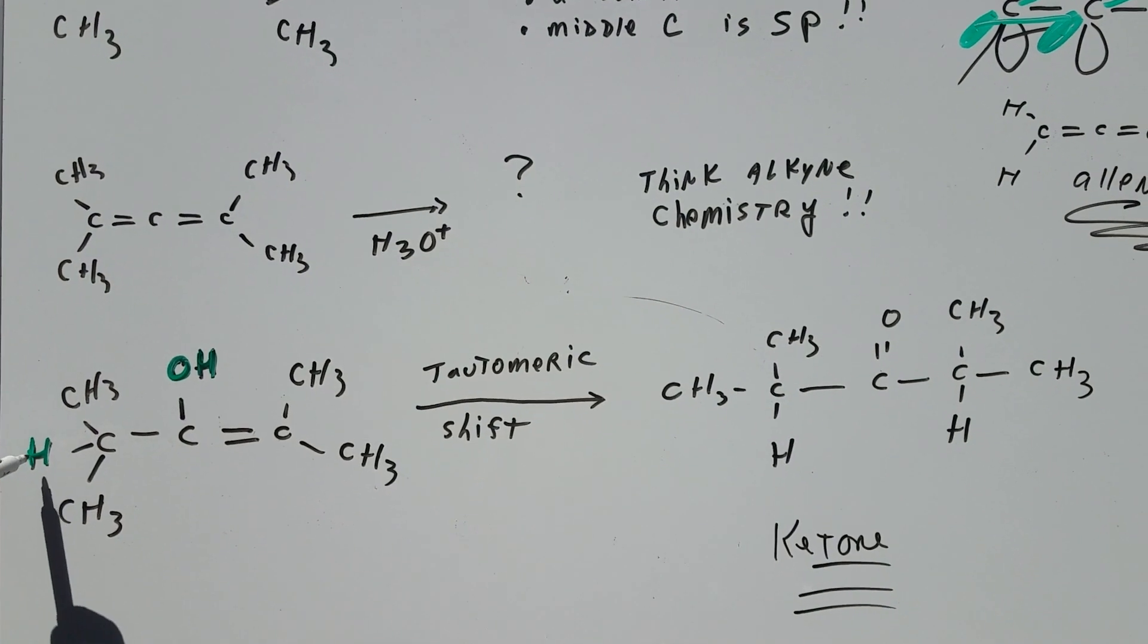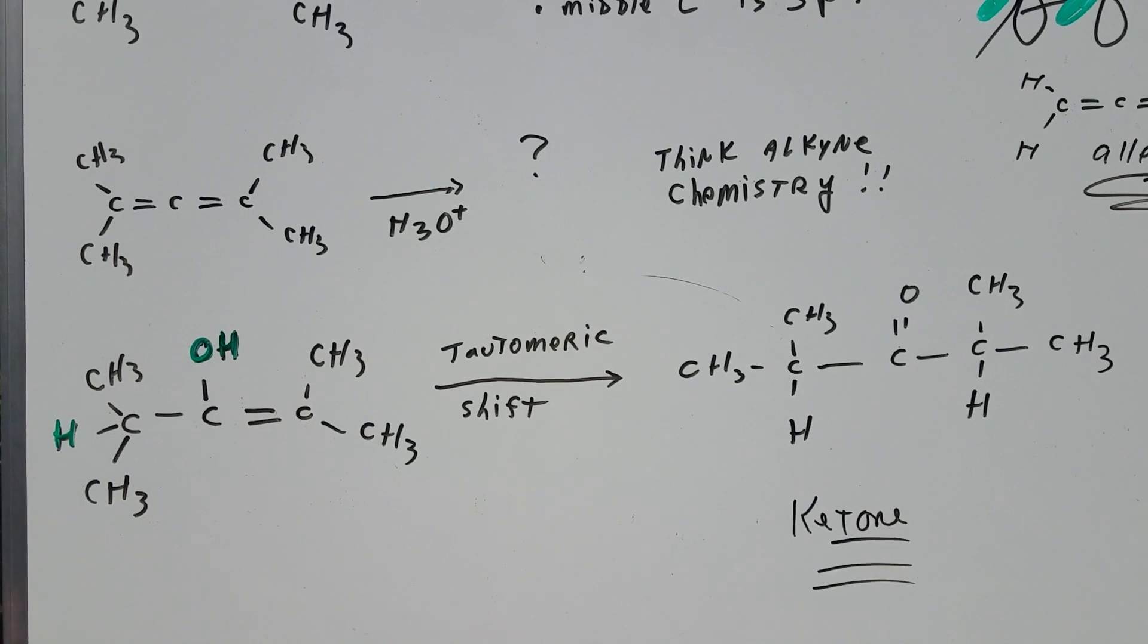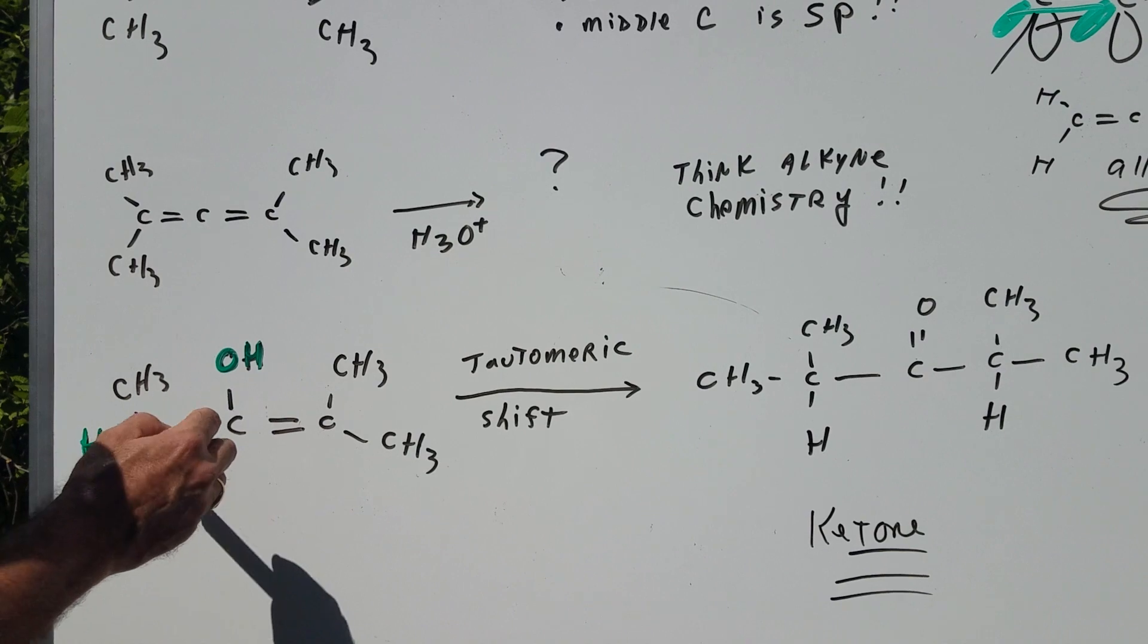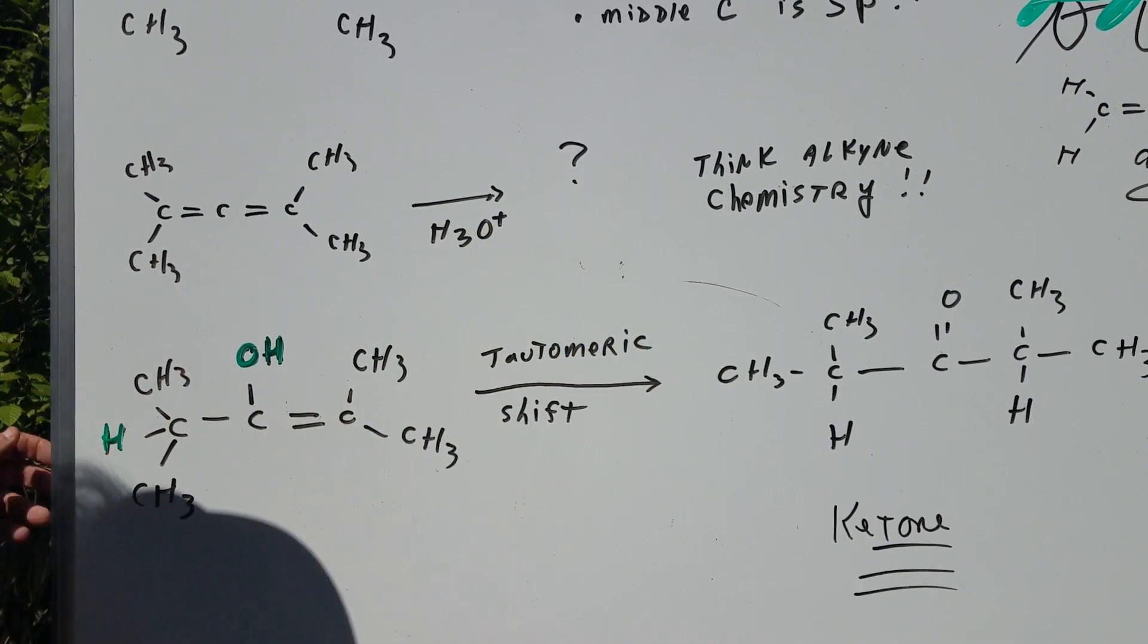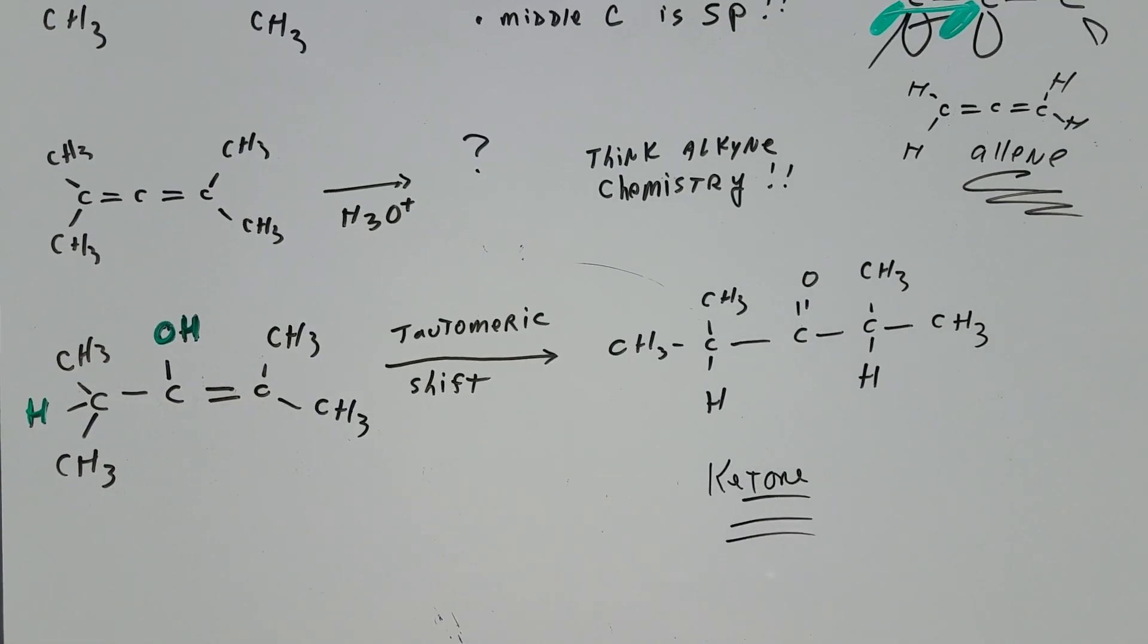What I'm going to do is first add an H and an OH, and I'm going to put an H over here and an OH here. When we did something like this, we would then undergo a tautomeric shift, in which the H went to here, the double bond went to there, and as you can see, the resulting compound is a very stable ketone.